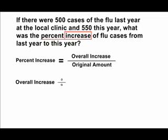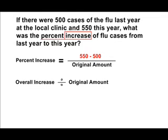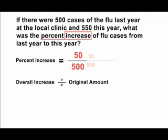When we set up our problem to find the percent increase, our numerator is the difference from one year to the next year — in this case, it's 50. For the denominator, we must use the original amount, because when we find the percent increase, we're finding out how much it actually went up as compared to the original amount.